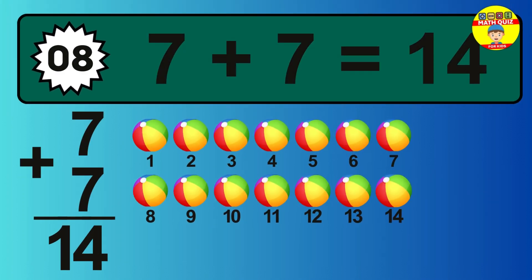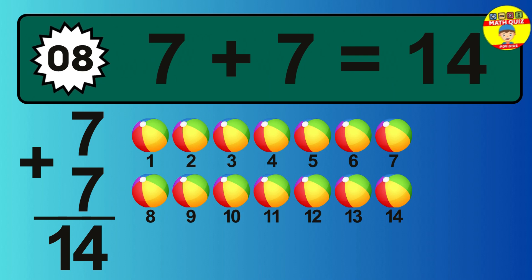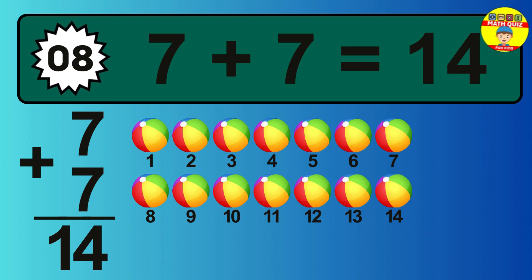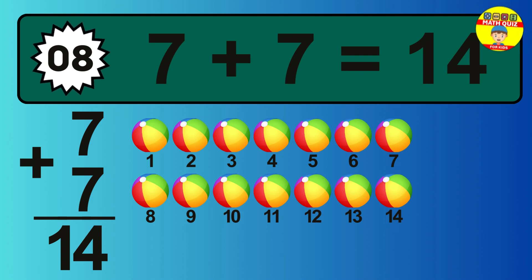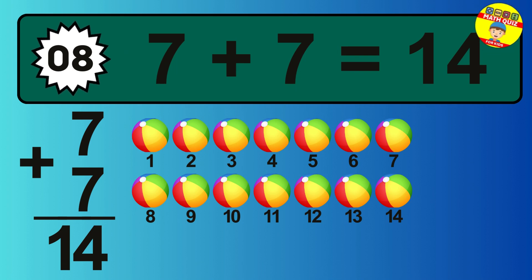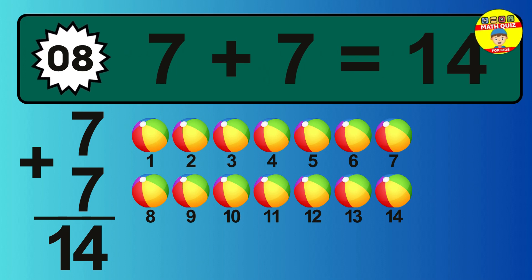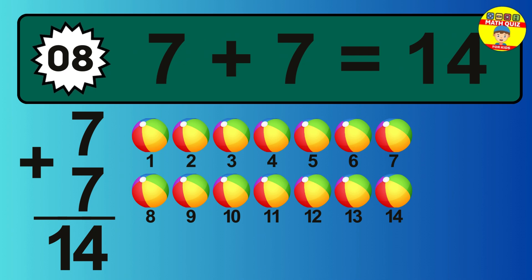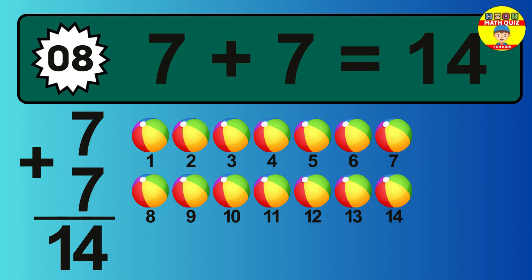So the answer is 7 plus 7 is 14. Let's count it: 1, 2, 3, 4, 5, 6, 7, 8, 9, 10, 11, 12, 13, 14.